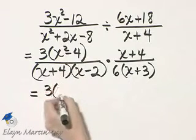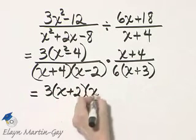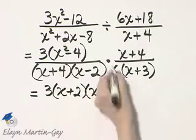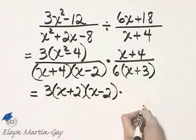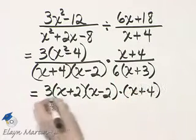This is the difference of two squares, so it factors as x plus 2 times x minus 2, and then times my other numerator, x plus 4 over.